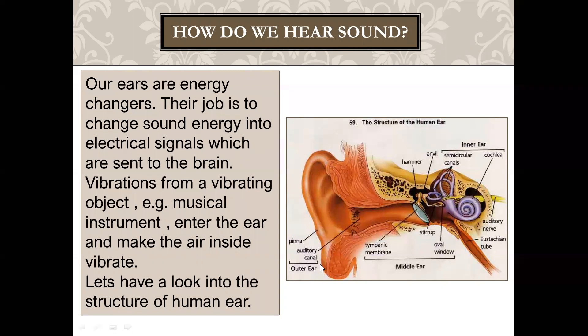The outer ear includes the ear flap — in biology we call it the pinna — and an inward tube called the auditory canal. Inside the auditory canal there are hairs, which help to trap dust particles, and wax is collected there. Then comes the middle ear.